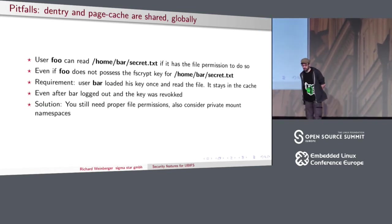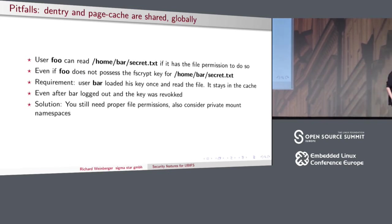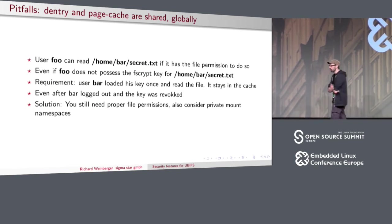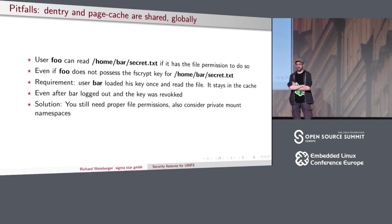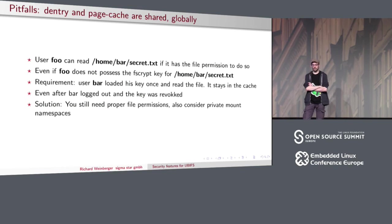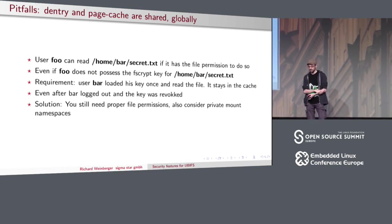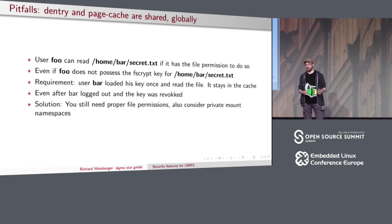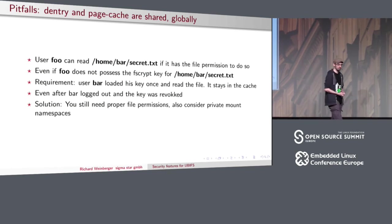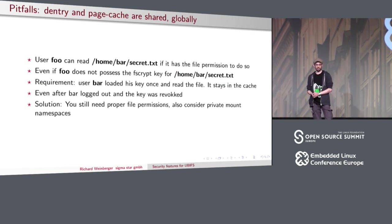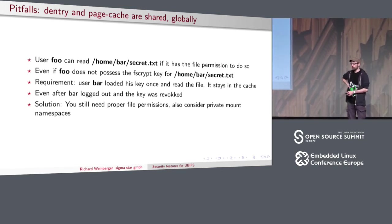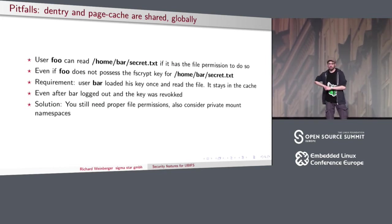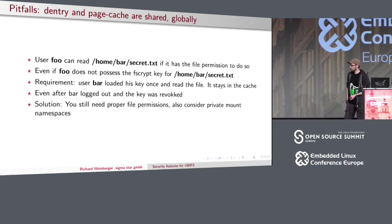Now a few pitfalls — these are just made up examples to illustrate real risks. Say we have two users, foo and bar. User bar has a secret encrypted file. Foo can still be able to read that file if bar loaded his key and read the file, and foo has the Unix permissions to read it — the file name will be in the dentry cache and the contents in the page cache. This means that even when you encrypt home directories using FSCrypt, you still have to set up proper Unix permissions. Or better yet, at logon time create a new private mount namespace for each home directory so that the mount is completely hidden.